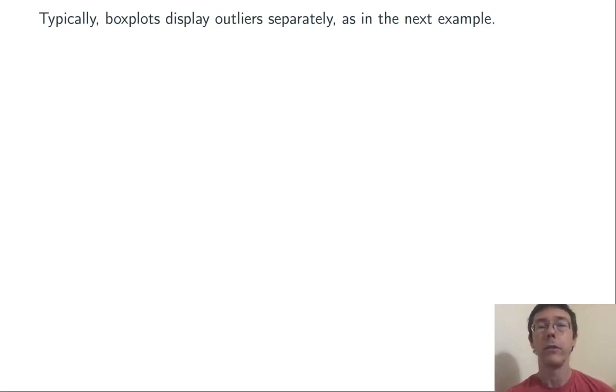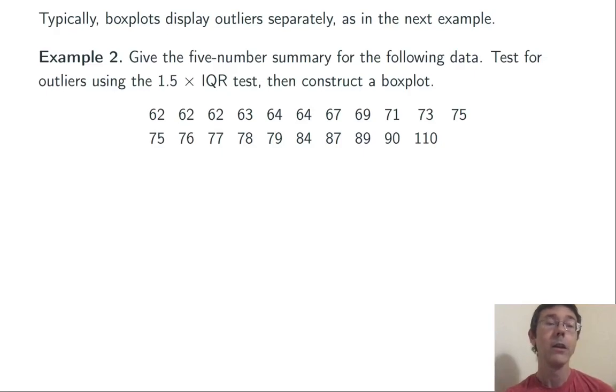Typically, box plots display outliers separately, as in this next example. By the way, that first example did not have any extreme values, and so it was not an issue when we graphed it there. Here, we want to give a five-number summary for this data set. We want to test for outliers using the 1.5 times IQR test, and then construct a box plot.